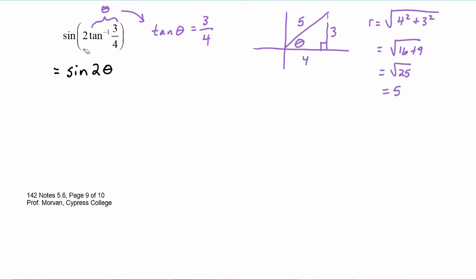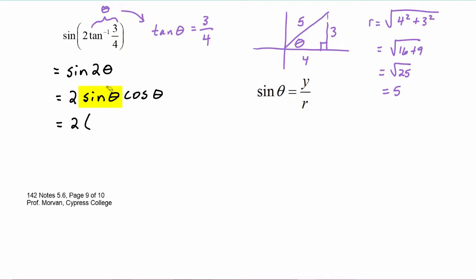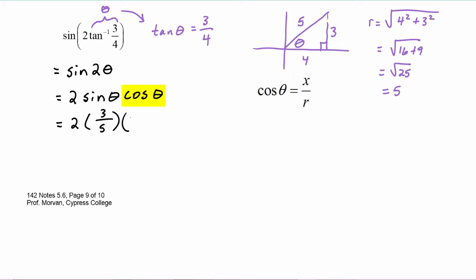So finding the sine of two times tangent inverse of three-fourths, we substitute with the sine of two theta. We have an identity for that: this equals two times sine theta cosine theta. From our picture, sine of theta is the y value three divided by r five, and cosine of theta is the x value four divided by r five. The denominator is five times five which is twenty-five. The numerator is two times three times four, which is twenty-four. So the answer is twenty-four over twenty-five.